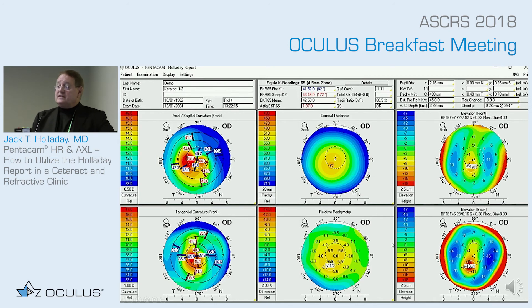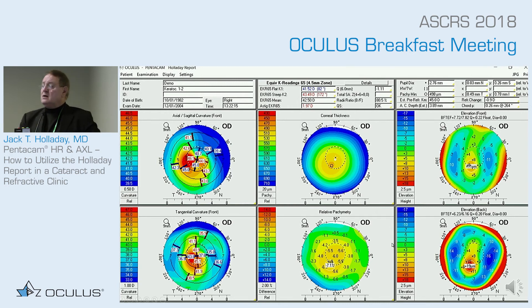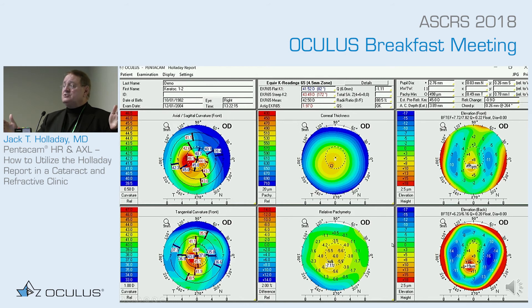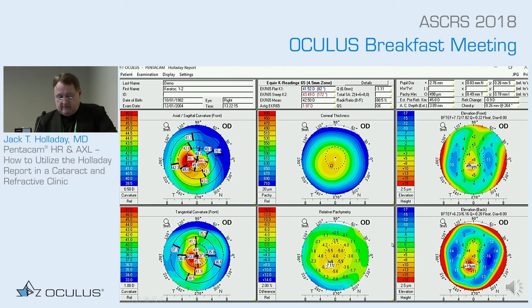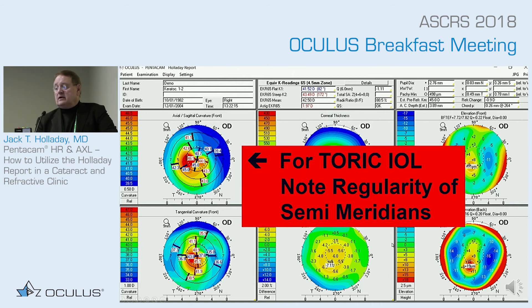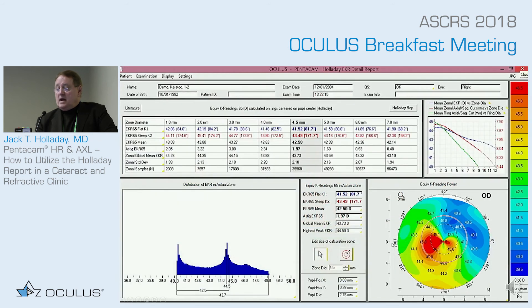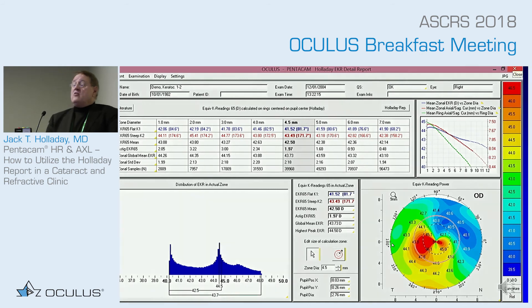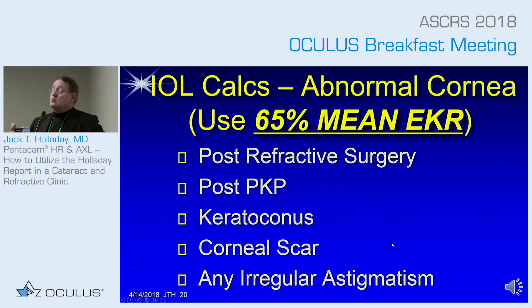Looking at another patient: in the upper left, look at the breaks in those meridian lines — that patient is not going to have good vision with a toric IOL because there is no axis that accurately represents their astigmatism. They have an asymmetric bow tie with irregularity. So even though we can give you the best K readings, you can predict right there that good vision is unlikely. Always look at the regularity of the semi-meridians if you're considering a toric IOL. In a keratoconus case, you see a bifocal cornea — high power for near, lower power for distance.